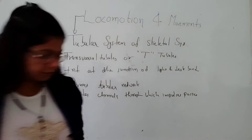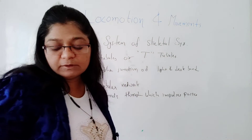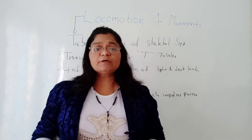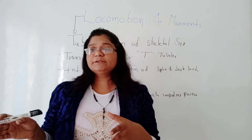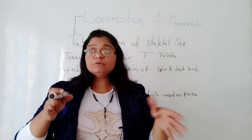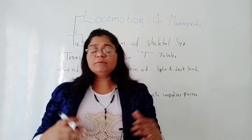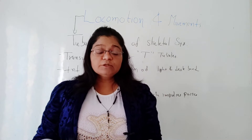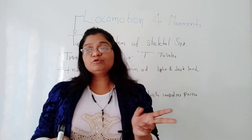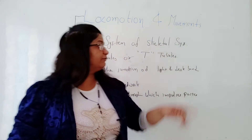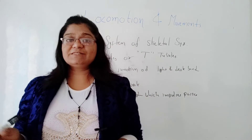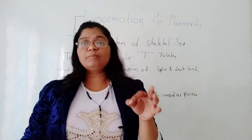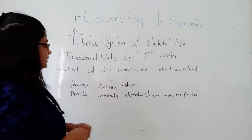Another tubule, besides the T-tubule, is the sarcoplasmic reticulum tubule. The sarcoplasmic reticulum tubules are the smooth sarcoplasmic reticulum tubules of the muscle cell. In our cells, two tubules are present: one is the T-tubule, which is the transversal tubule, and the other is the sarcoplasmic reticulum tubule.